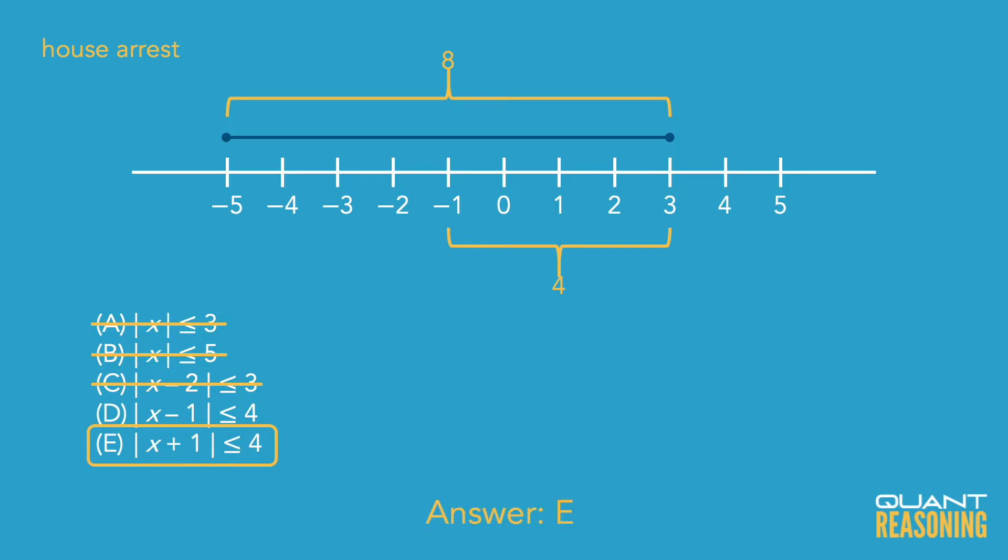Answer choice e fits the bill. You've got x plus one, so it's shifting it one unit to the right, and it's less than or equal to four, which is exactly what we wanted.